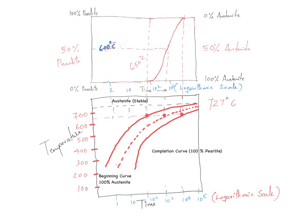This diagram is called the TTT diagram — time, temperature, and transformation — capturing all three, which is why it's called the triple T diagram. A few important points: this curve is only valid for an iron-carbon alloy of eutectoid composition, and the curves are only valid if the temperature is held constant throughout the reaction — that's why it's called the isothermal transformation diagram.